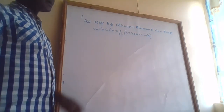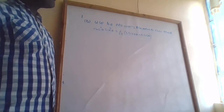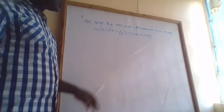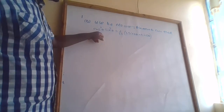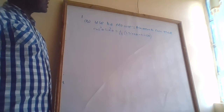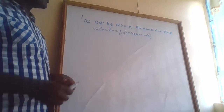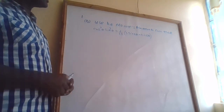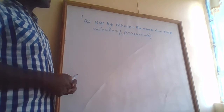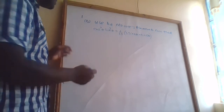We want to use De Moivre's theorem to show that cos³θ · sin³θ equals 1/32 times (3sin2θ minus sin6θ).